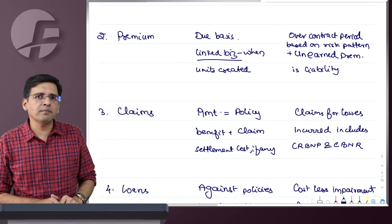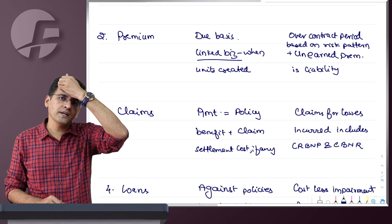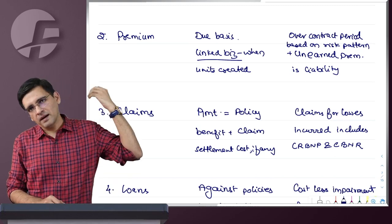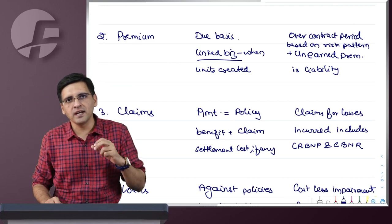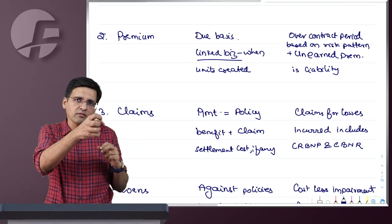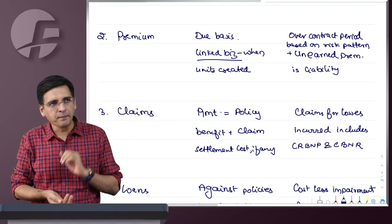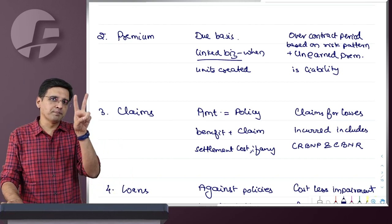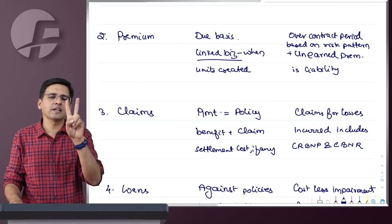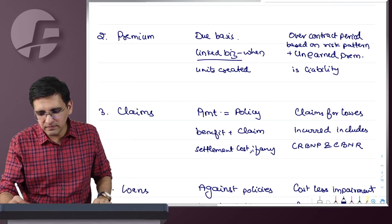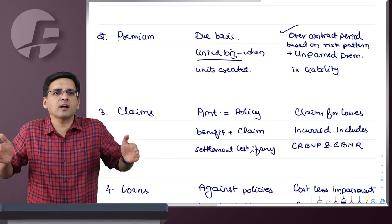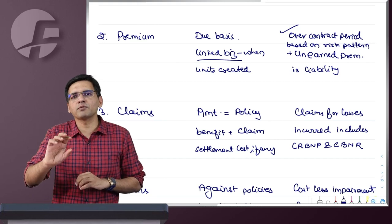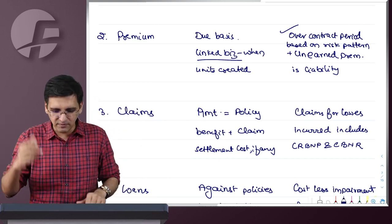Premium: in life insurance, premium is booked on a due basis because premium may be due but not yet received — that's okay because the policyholder has a savings component in the premium that can be allocated. But if it's linked business (unit-linked insurance plan), premium is booked on the day units are created. In general insurance, premium is booked on the day you assume the risk, and must be deferred based on the risk pattern. If risk extends beyond year-end, you defer some premium by creating an unexpired risk reserve.